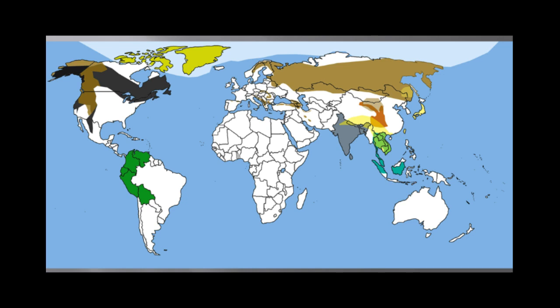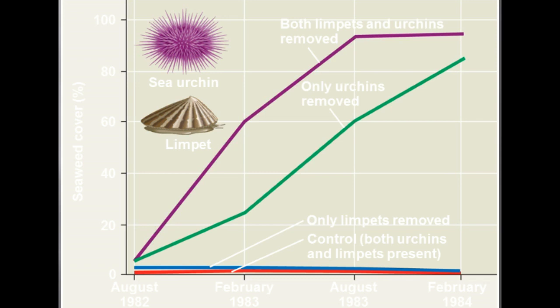Now let's look at the idea of dispersal. Dispersal is the movement of individuals away from centers of high population density or from their area of origin, and it contributes to global distribution of organisms. Species transplants include organisms that are intentionally or accidentally relocated from their original distribution.